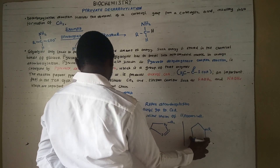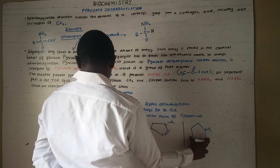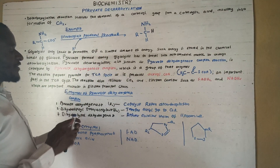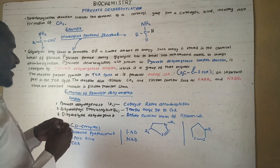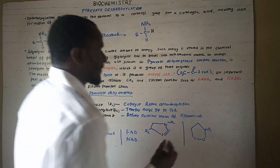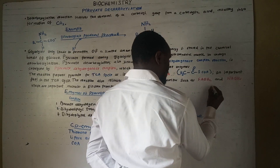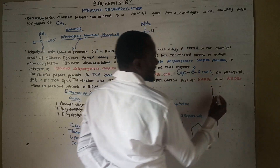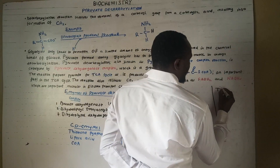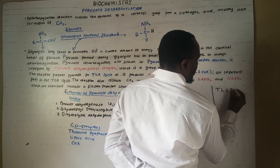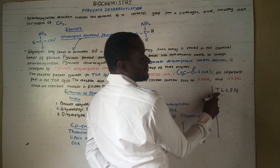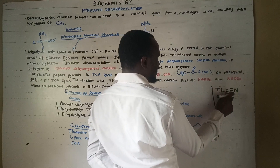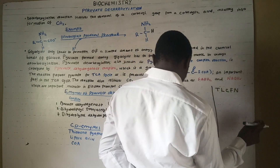To remember the order in which these coenzymes react, use the mnemonic TLC FN — Thiamine pyrophosphate, Lipoamide, Coenzyme A, FAD, and NAD⁺. Thank you very much.